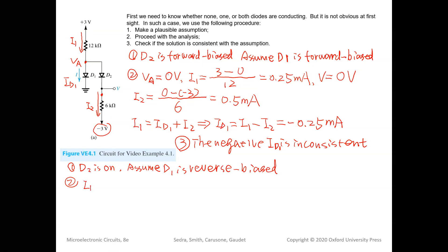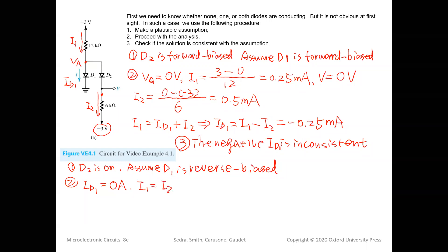ID1 is immediately zero because it's an open circuit. I1 must equal I2 since there is now only one current path. We apply Ohm's law from +3 V to −3 V through the 12 kΩ and 6 kΩ resistors in series: I1 = I2 = (3 − (−3)) / (12 + 6) kΩ = 6/18 = 1/3 mA ≈ 0.333 mA.